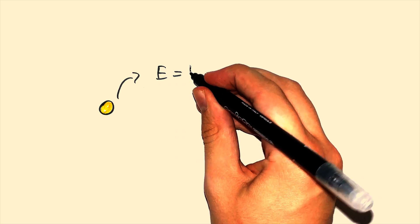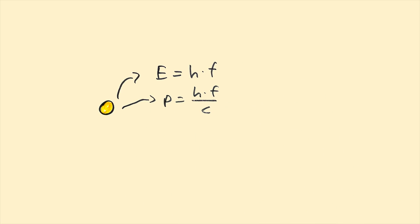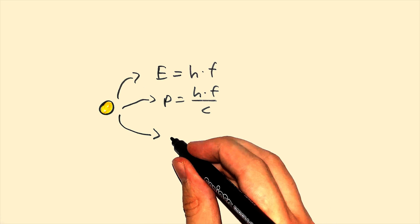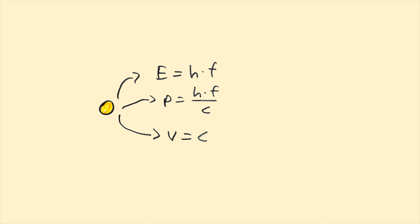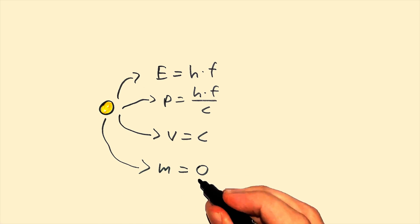So in conclusion, we use this equation to calculate a photon's energy, this equation to calculate its momentum, we know for a fact that its velocity is always c, and we know for a fact that its mass is actually 0.